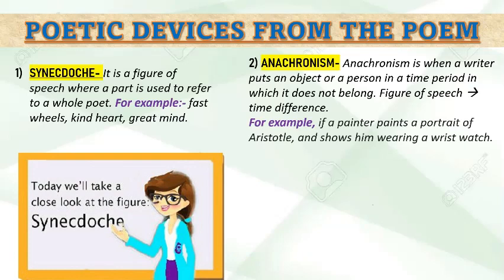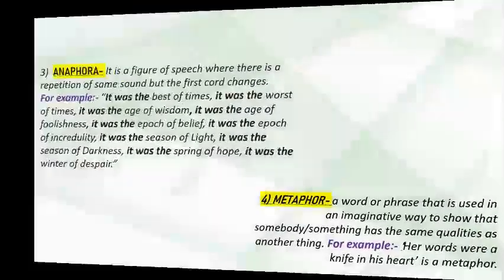Now let's know about anachronism. Anachronism is when a writer puts an object or a person in a time period in which it does not belong — there is no connection with that time, still it has been placed there. Time difference is the biggest factor in this figure of speech. For example, if a painter paints a portrait of Aristotle and shows him wearing a wristwatch.